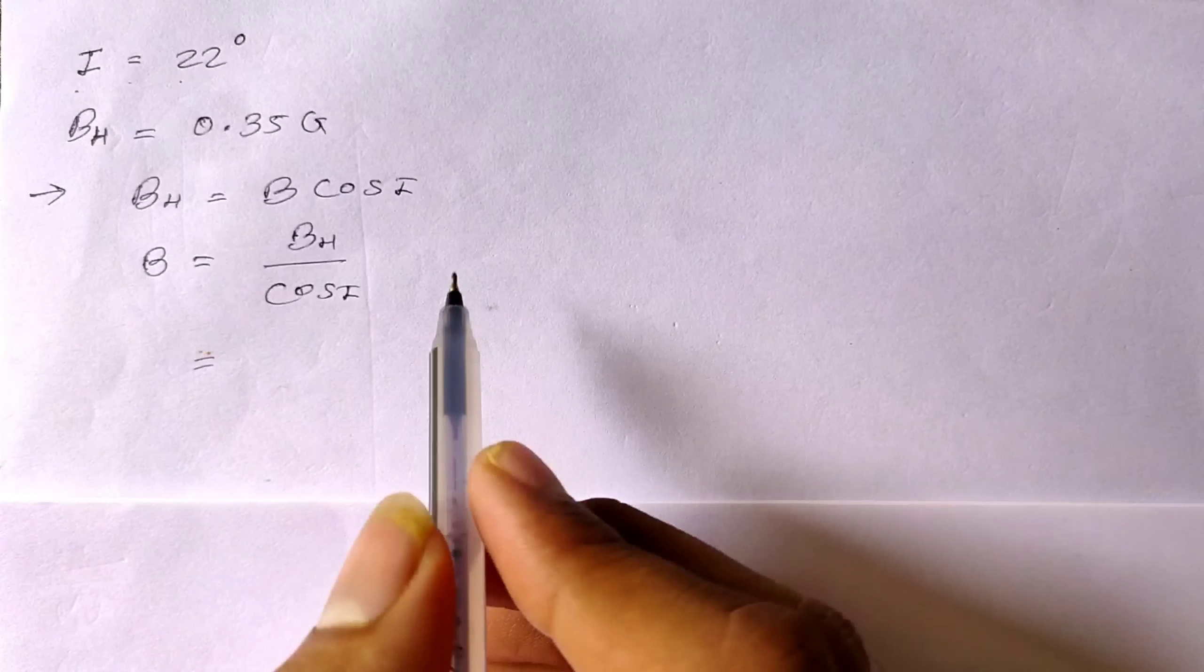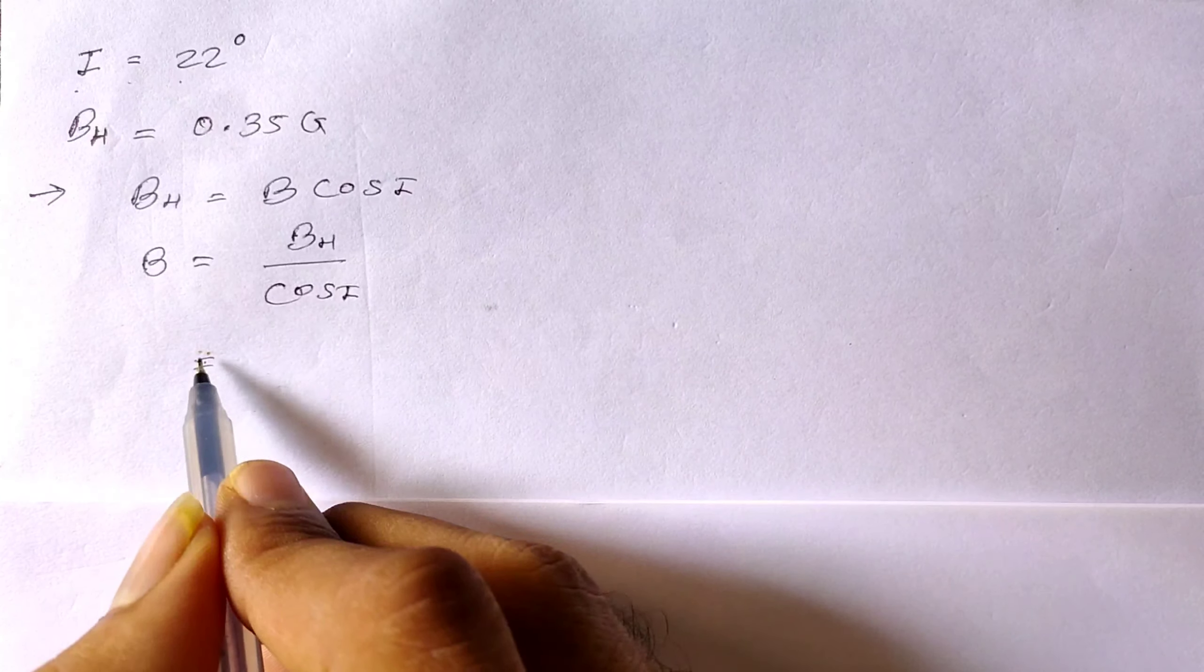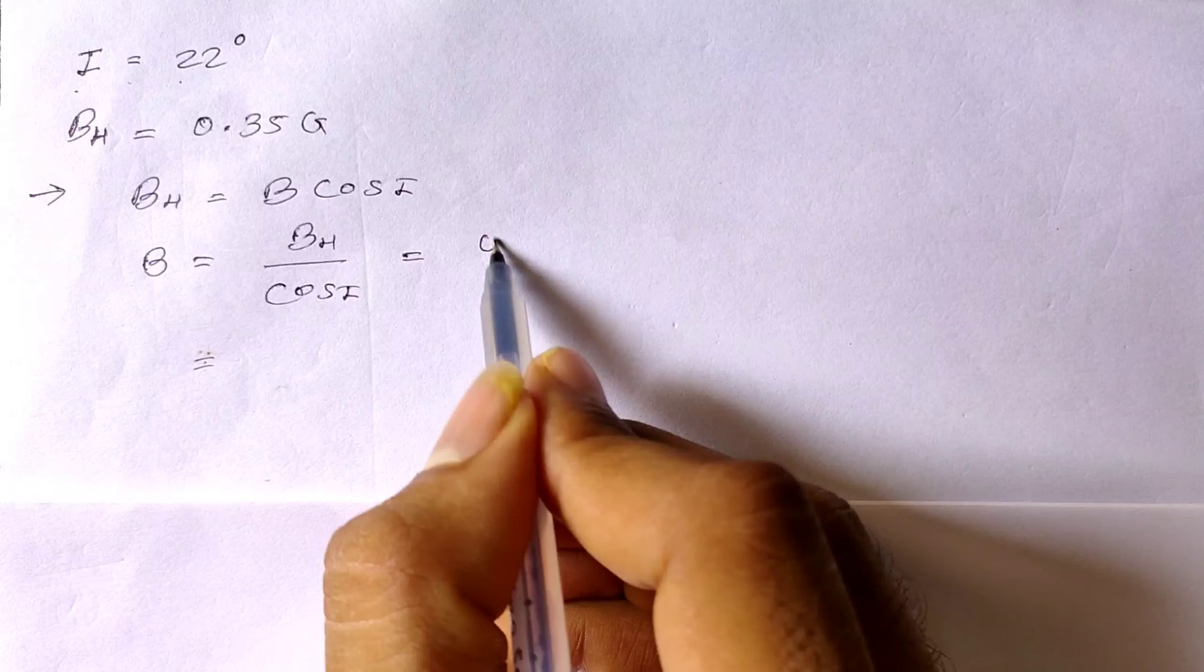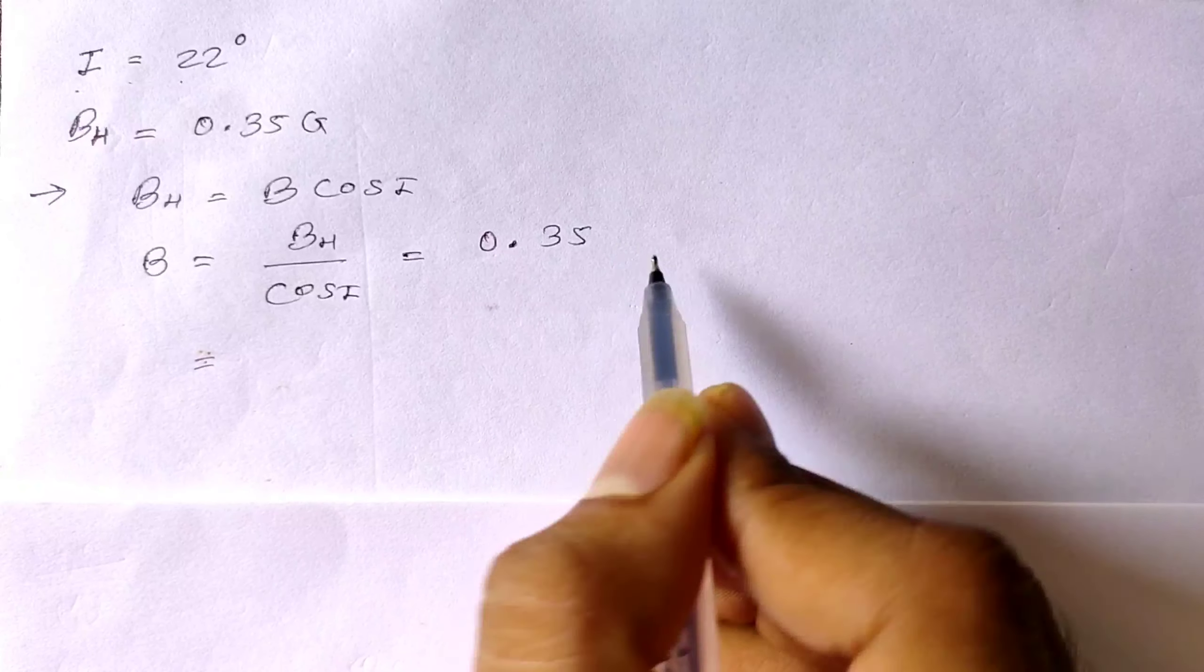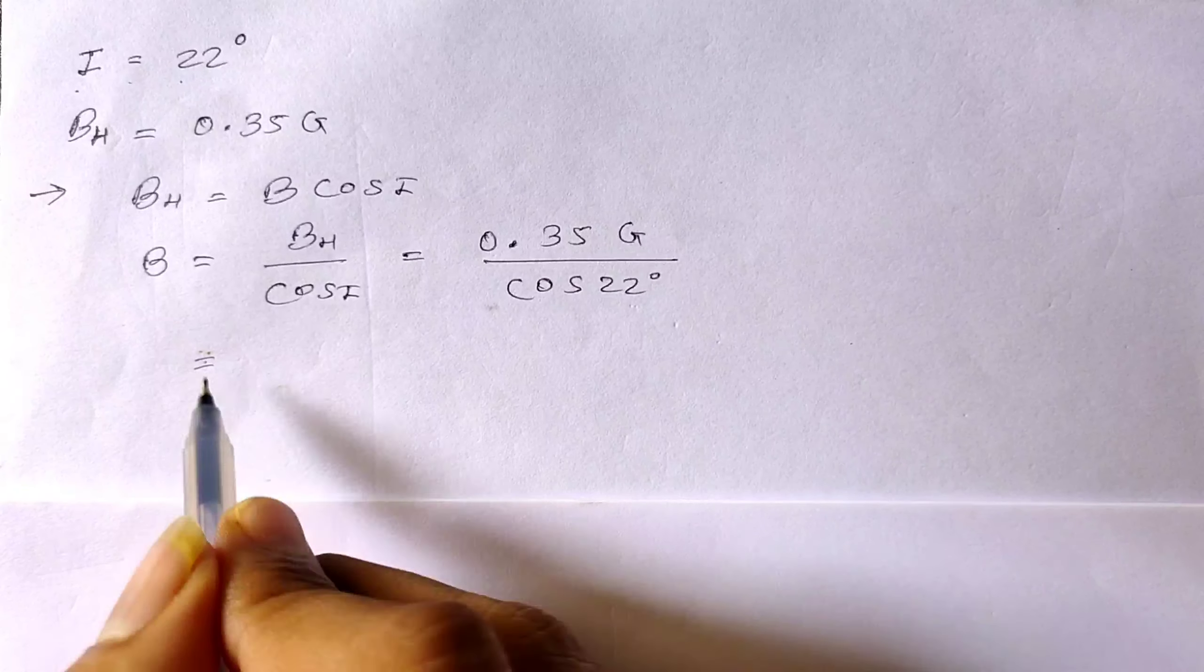We have the value of BH, which is 0.35 Gauss. So B equals 0.35 Gauss divided by cos I, which means cos 22 degrees.